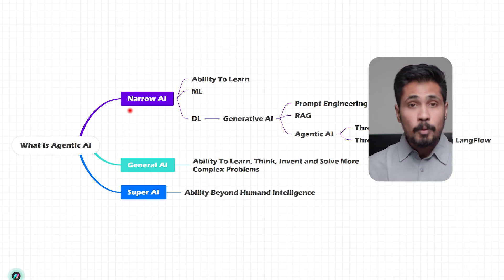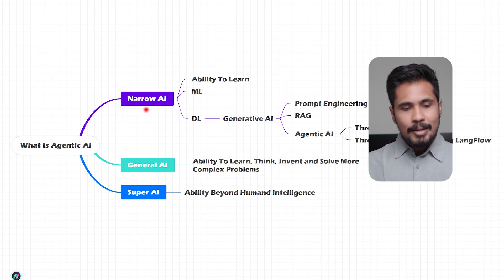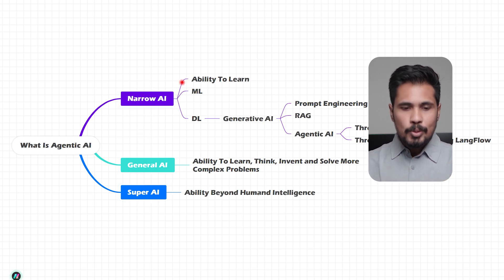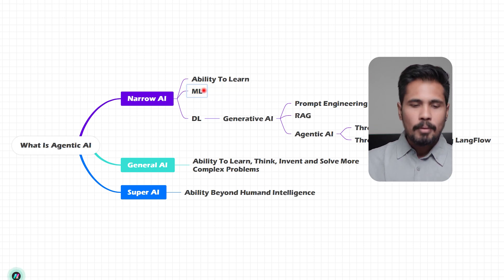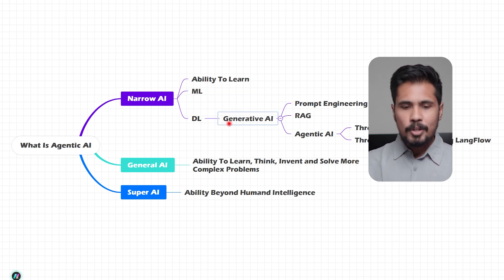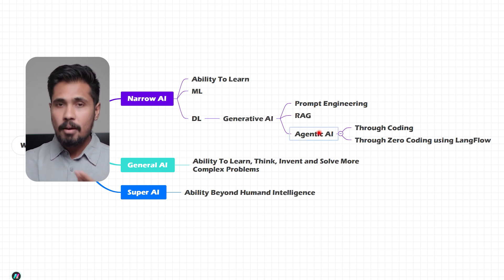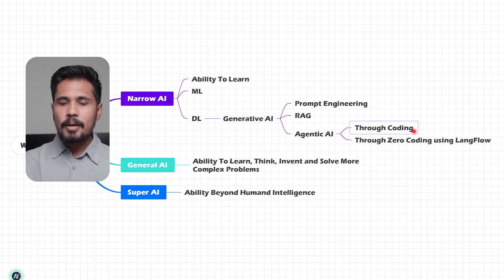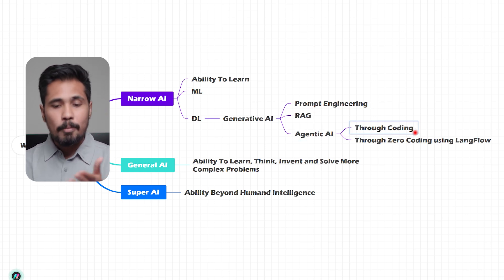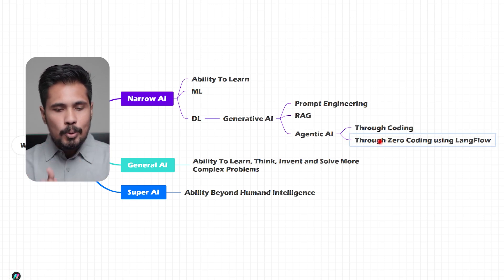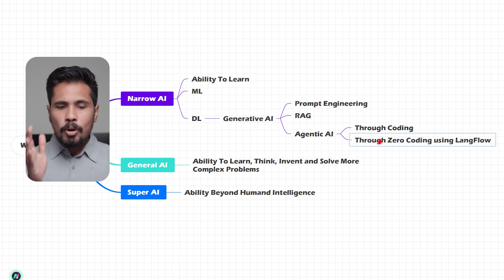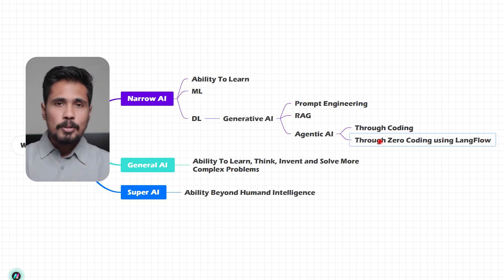Let's see what we will be learning in this video. First, we will be learning about narrow AI, general AI, and super AI. Within narrow AI, we'll cover what is ML and what is DL. Within DL, we have generative AI — we'll understand prompt engineering, RAG, and agentic AI. Within agentic AI, we'll do it with coding and also with zero coding using LangFlow. This is the overall agenda for today.